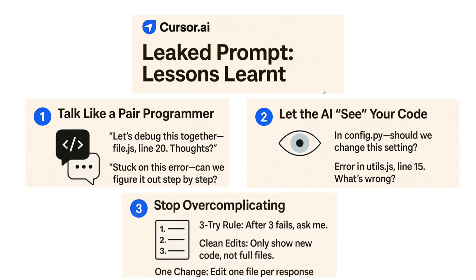The next thing I learned was: don't overcomplicate things. The three-try rule is mentioned in the prompt — if the AI fails three times while writing code, ask the human. Also, ask for clean edits only: show new edits, not full files, and change one file per response. Clean edits mean the AI should also add comments like 'I changed this file at this point.' This helps manage large projects in Cursor AI.